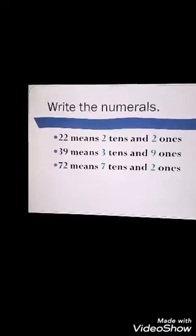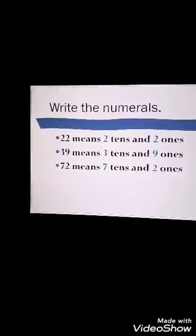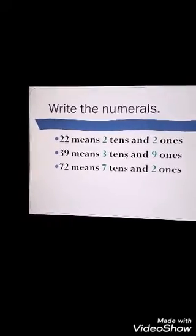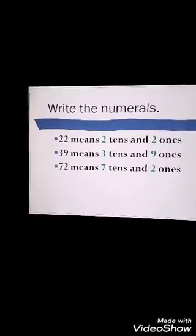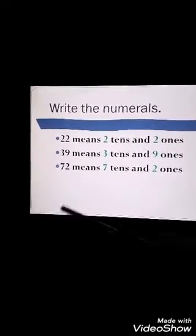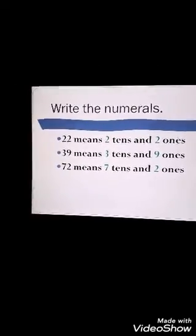Then next you have to see thirty-nine. Thirty-nine means three tens and nine ones. Next number is seventy-two. Seventy-two mein kitne tens honge? Seven tens and two ones.